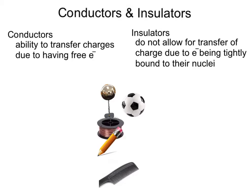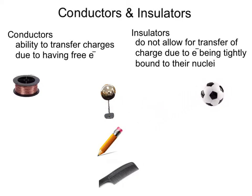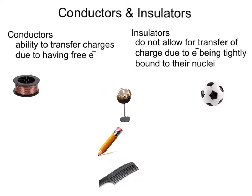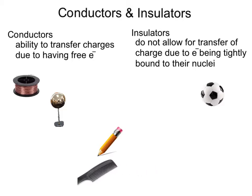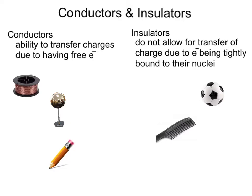Let's see if you can identify which type of object below is a conductor or insulator. Copper wire is a great conductor of electricity. A soccer ball, due to its leather or synthetic material, is an insulator. All metals are great conductors of electricity due to their free electrons, so a metal sphere is a conductor. A plastic comb is a great insulator. A pencil is actually a great conductor due to the graphite lead being a good conductor of electricity.